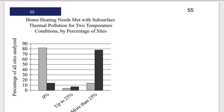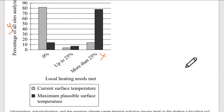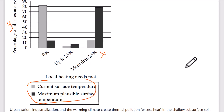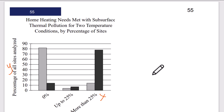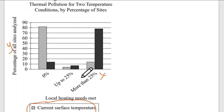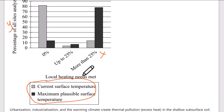It's also possible you might have trouble with relevancy if you simply don't understand the graph or table. Most graphs and tables have three variables: the Y variable, the X variable, and the different groups that make up the legend. In some harder cases — like a chart about home heating needs met with subsurface thermal energy for two temperature conditions — you might look at the graph and not know where to start. The actual paragraph may not help clarify it much, so this can be one of the harder questions, but there are tricks you can use to deal with it.